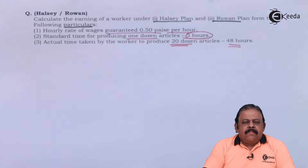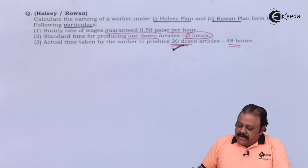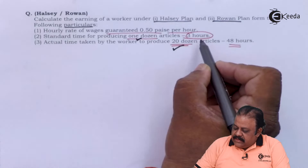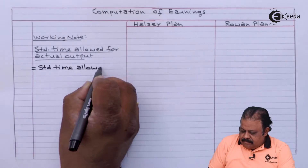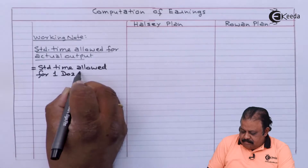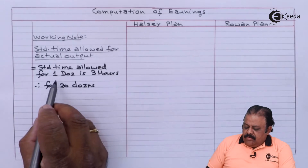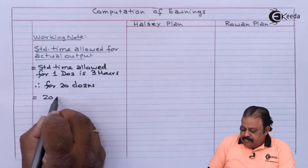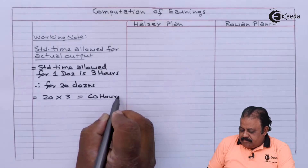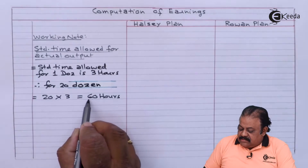We are required to find out the standard time allowed for actual output. The actual output is 20 dozen, and the standard time for producing one dozen is given as three hours. Therefore, for 20 dozen it will be 20 multiplied by 3, that is 60 hours.